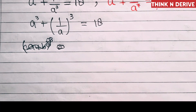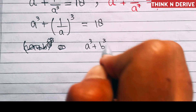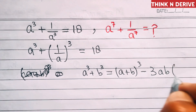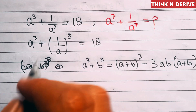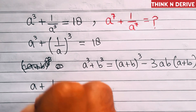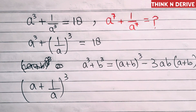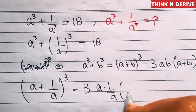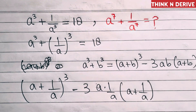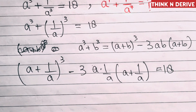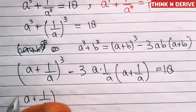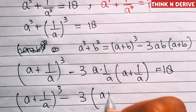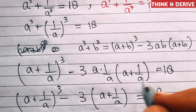Now we'll apply the formula. We know a³ + b³ = (a+b)³ - 3ab(a+b). So here we can write (a + 1/a)³ - 3 × a × (1/a) × (a + 1/a) = 18. This simplifies to (a + 1/a)³ - 3(a + 1/a) = 18, since a and 1/a cancel out.